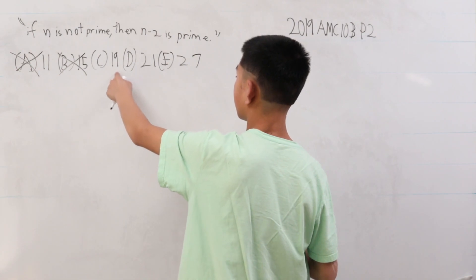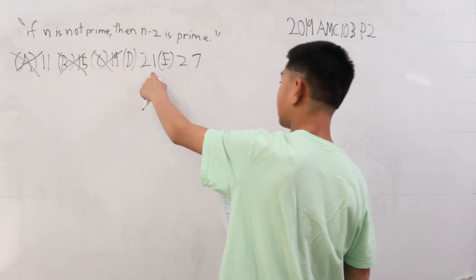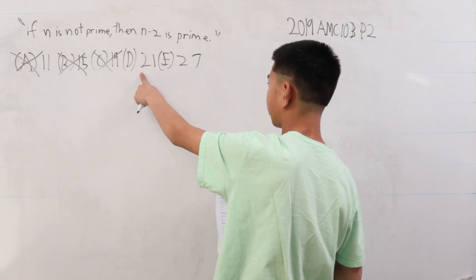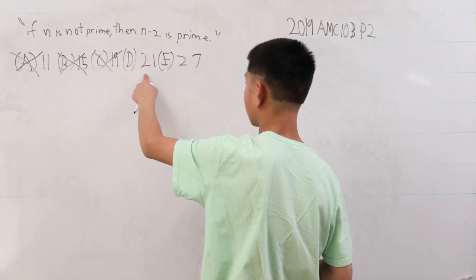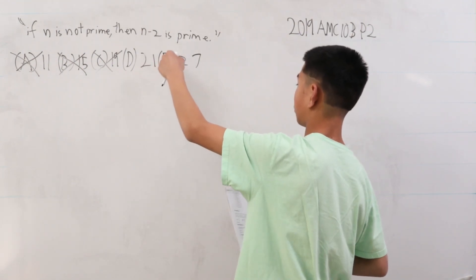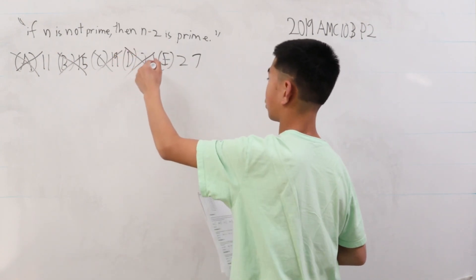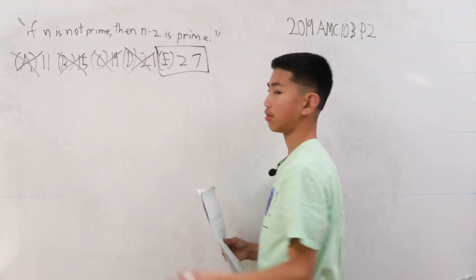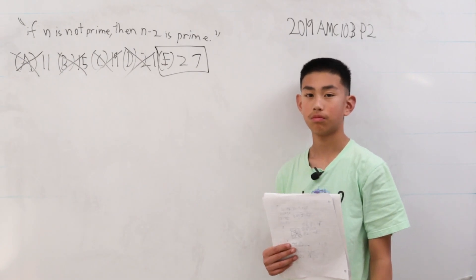And C is prime, that's 19. D is not prime, but n minus 2 is prime. We want it where it's not prime, so this doesn't work. So our answer is going to be E. Thank you.